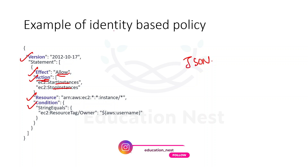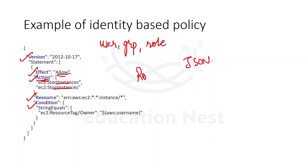This is an identity-based policy, so it would be attached to either a user, group, or role. Let's say I have ROI and this policy is attached to ROI — ROI would be able to start and stop EC2 instances. The resource here covers EC2 instances in all regions. Other actions on EC2 — like terminating or rebooting — are not allowed here. ROI can just start or stop; he cannot terminate because that action is not mentioned.